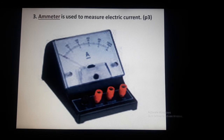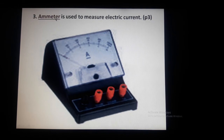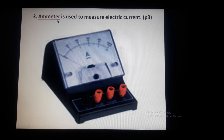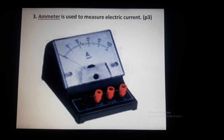Third question: an ammeter is used to measure electric current. Spelling: A-M-M-E-T-E-R. Don't confuse it with metre (M-E-T-R-E), the unit of length, or meter (M-E-T-E-R), a measuring device. The ammeter measures the amount of current — 11 amperes, 12 amperes — passing through a circuit. This instrument is connected in the circuit to measure electric current.